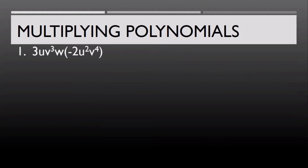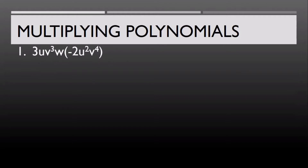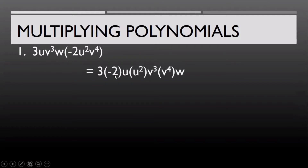For the first example, we have 3uv³w multiplied by negative 2u²v⁴. So we have here a multiplication of two monomials. In this example, we're just going to multiply the like terms — the numerical coefficient multiplied by the numerical coefficient and the variables multiplied by the variables.